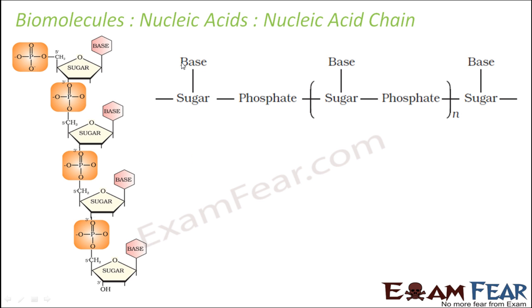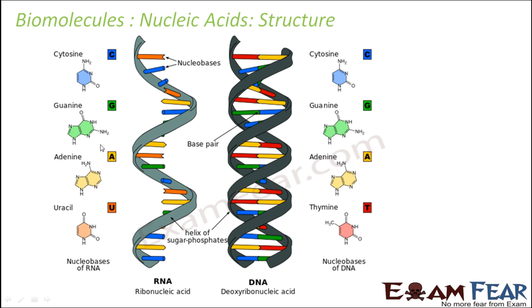This is how a nucleic acid chain is formed: base, sugar, phosphate — repeating in sequence, connected by phosphodiester bonds. Looking at the structure of nucleic acid, you have the nucleobases over the sugar-phosphate backbone. In the case of DNA, the bases pair up: adenine, shown in yellow, always pairs with thymine, shown in red. Similarly, cytosine, shown in blue, always pairs with guanine, shown in green. That is how base pairing takes place.